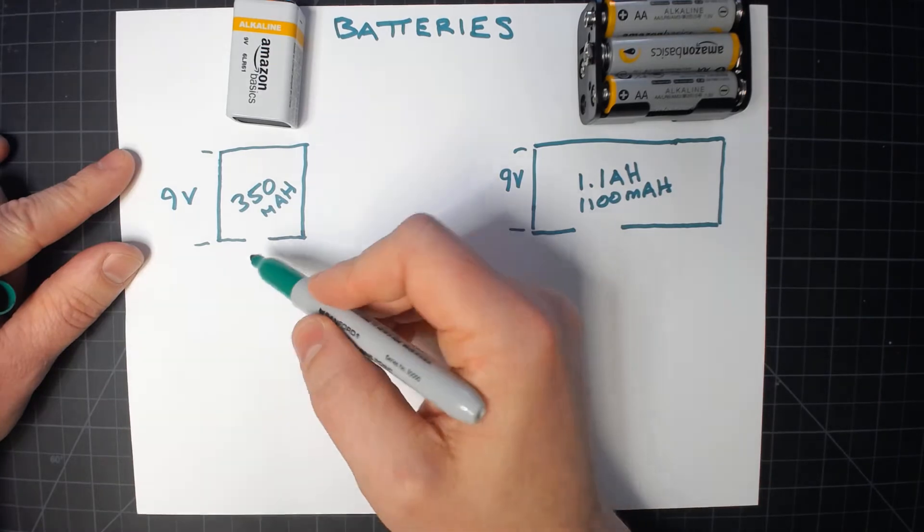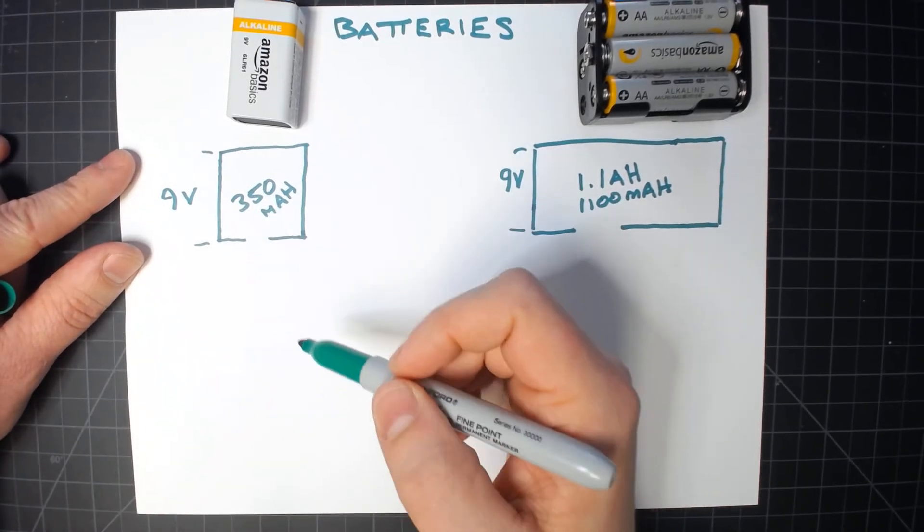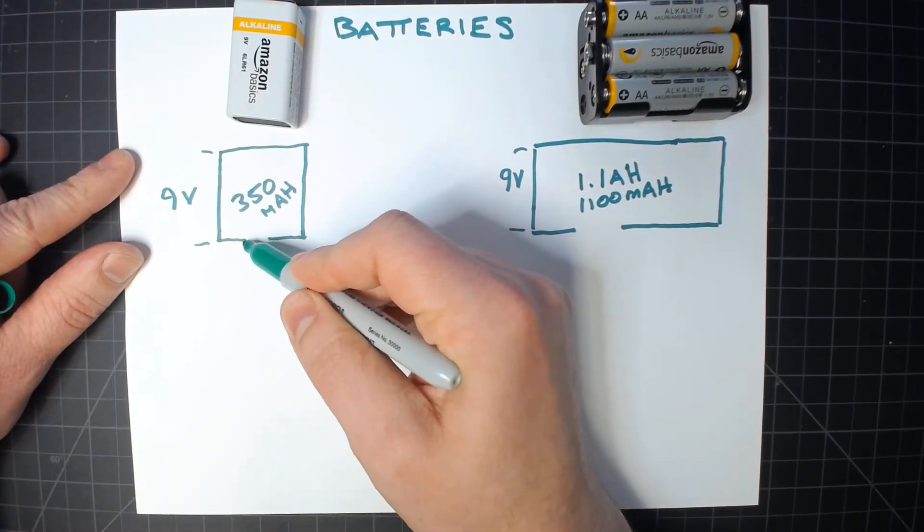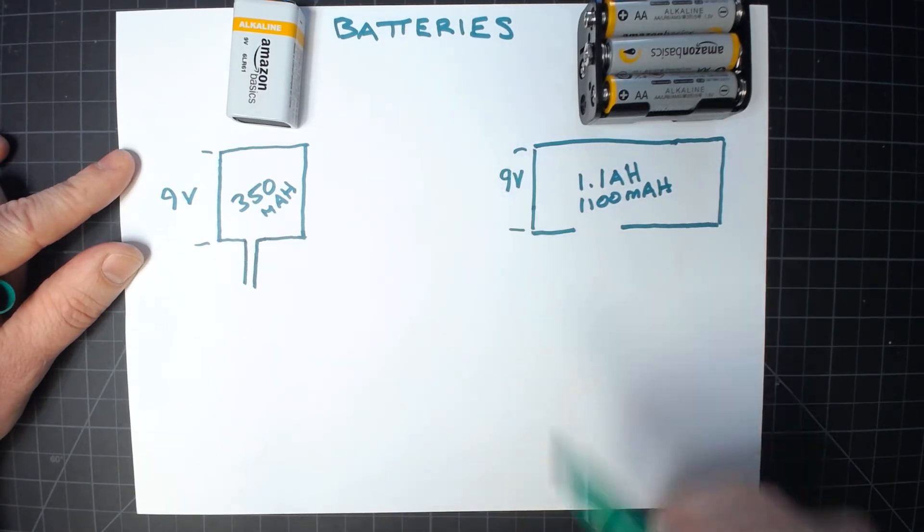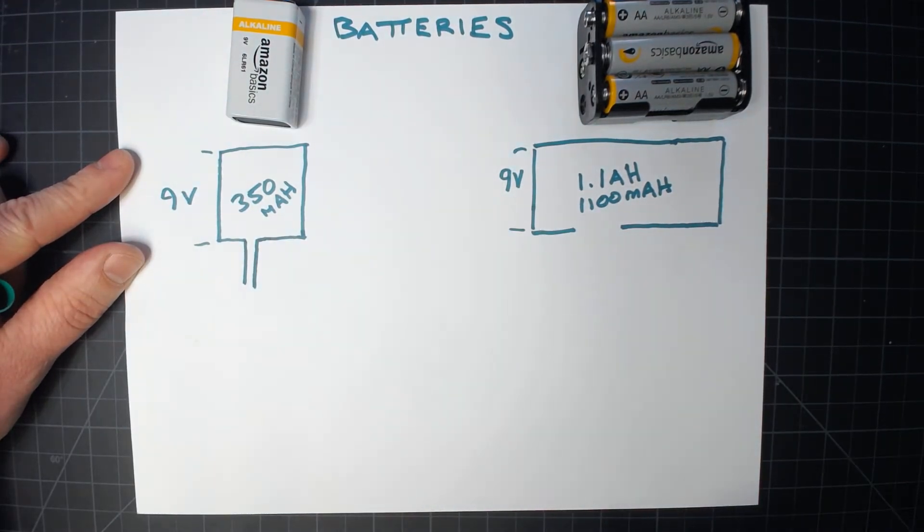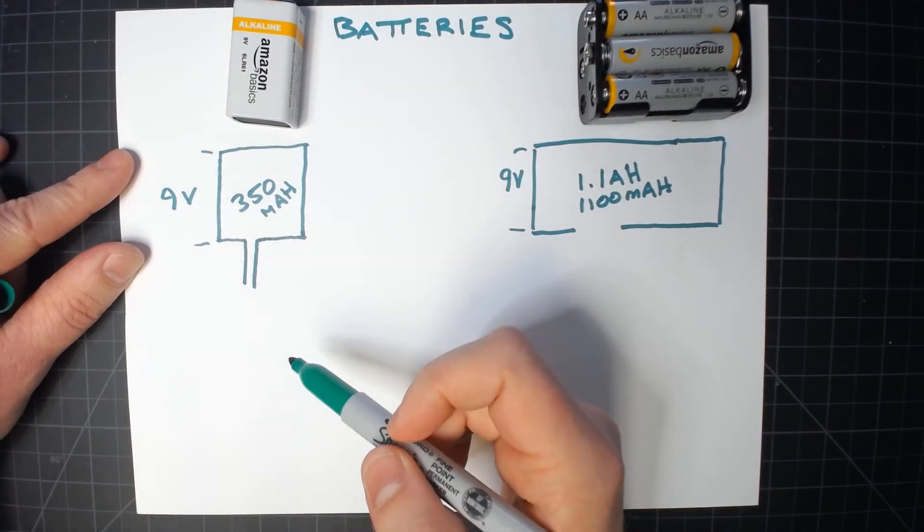So if you want to imagine this is a water tank, the size of the drain, in this case, basically tells you this is the maximum amount of flow out of it that we can have.